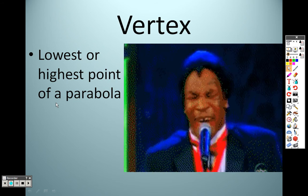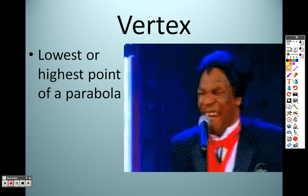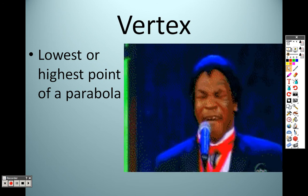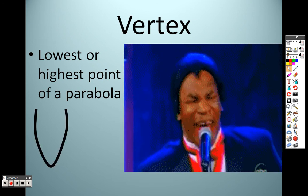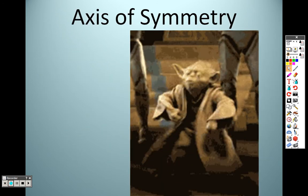So vertex, the vertex of a parabola is either the lowest point or the highest point of the parabola. It's either the maximum point or the minimum point of the parabola. Okay? And once again, that would be the minimum value down there and the max up there.